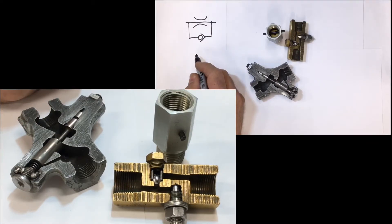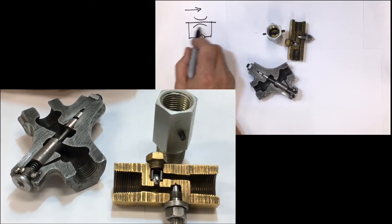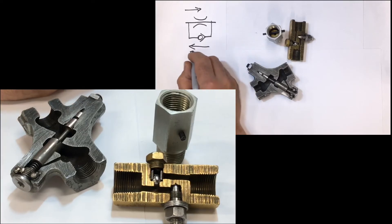So that in one direction, in this direction, it's metered. Notice that it can't pop the check ball off its seat, so it has to go through the orifice, but in this direction right here, it's free flowing.